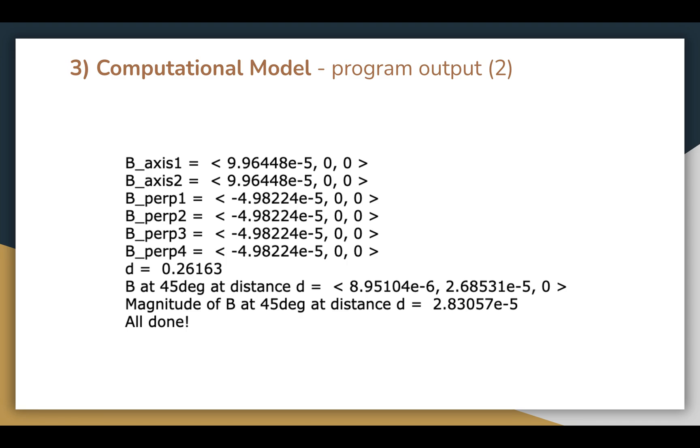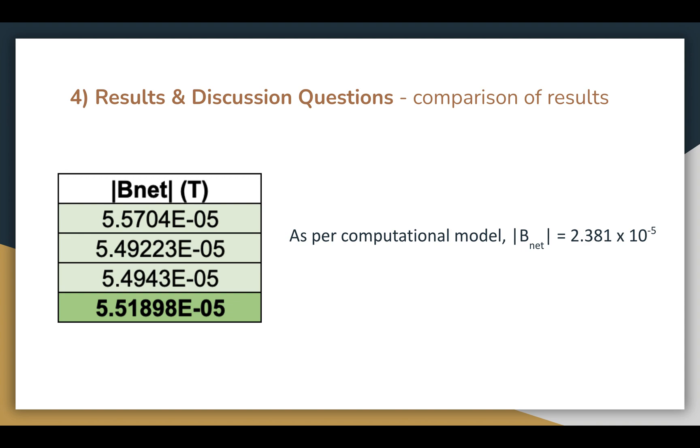And here's the text output. What we're most interested in is the second-to-last line, which shows the magnitude of the magnetic field at the 45-degree off-axis position. Let's compare that value to the value found through direct measurement, which is bolded in the table to the left. As we can see, the two values are not exactly the same.